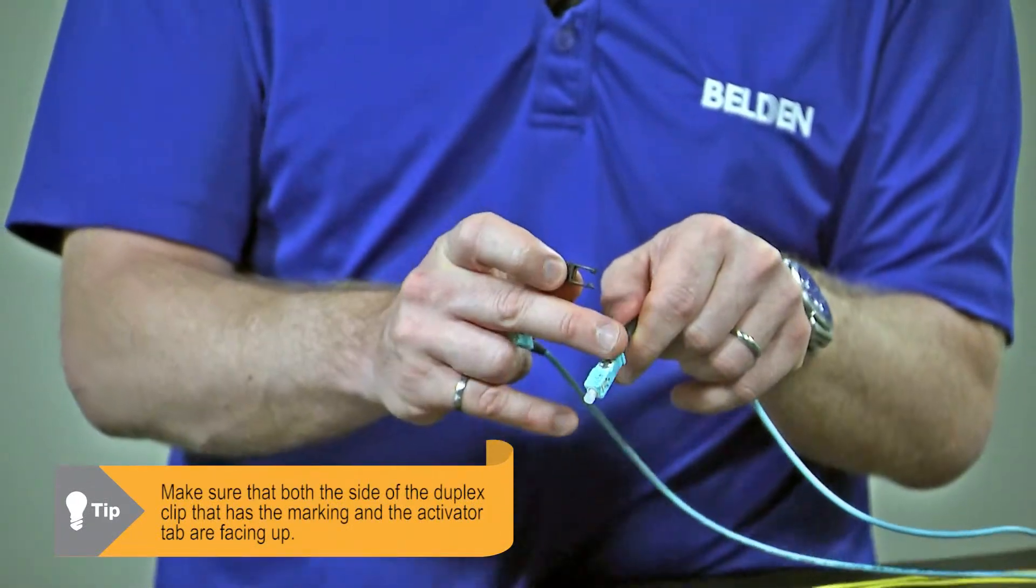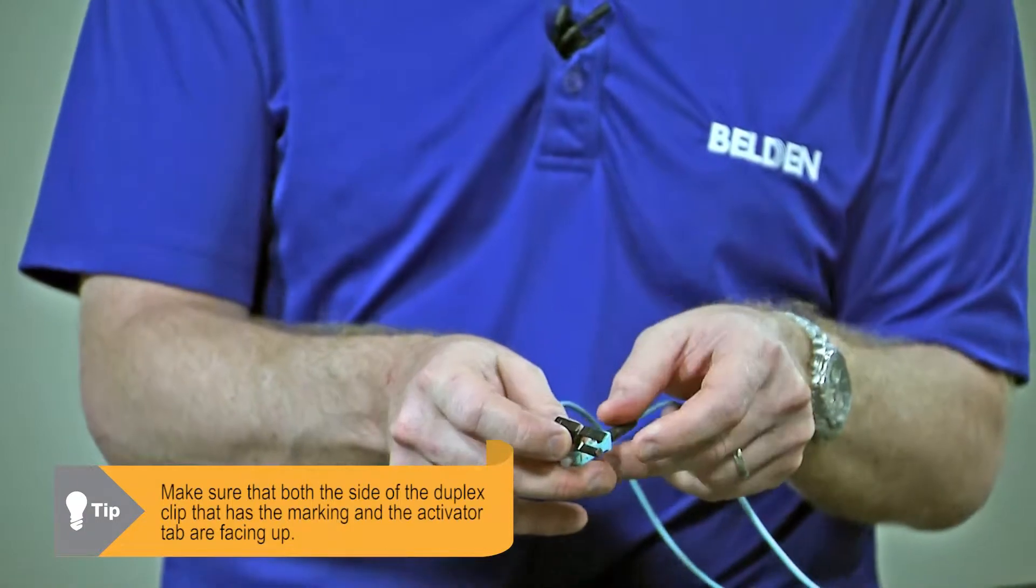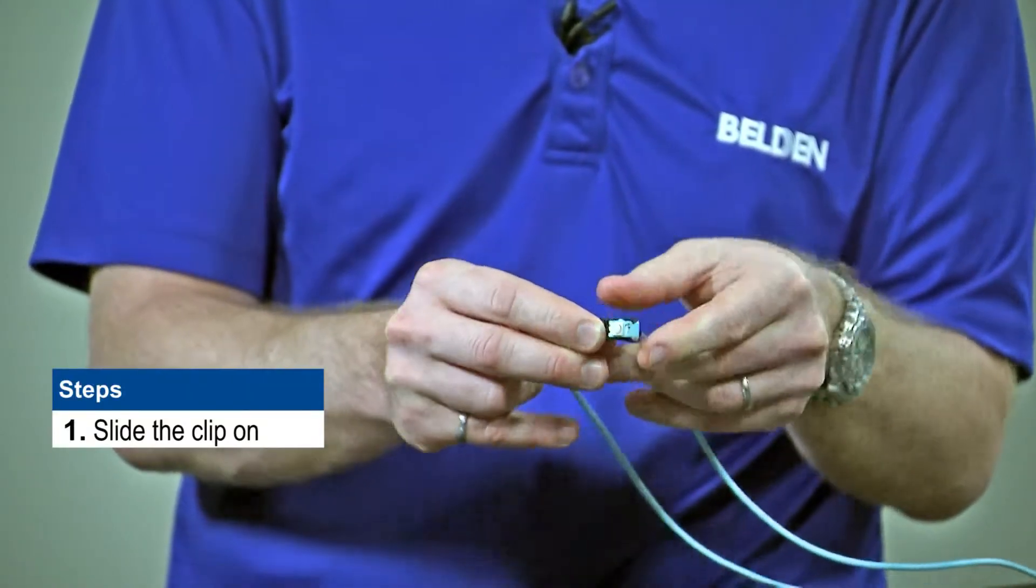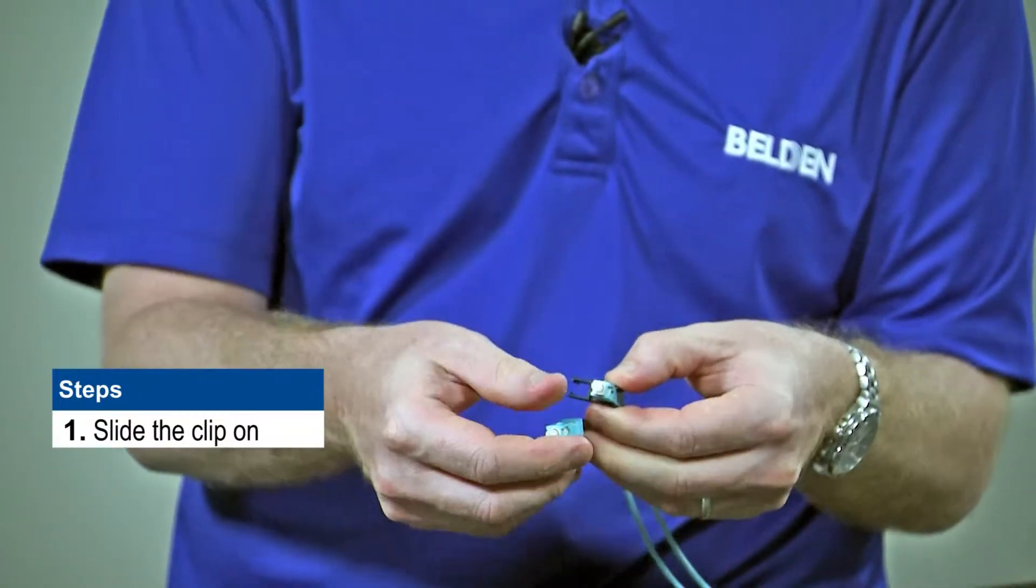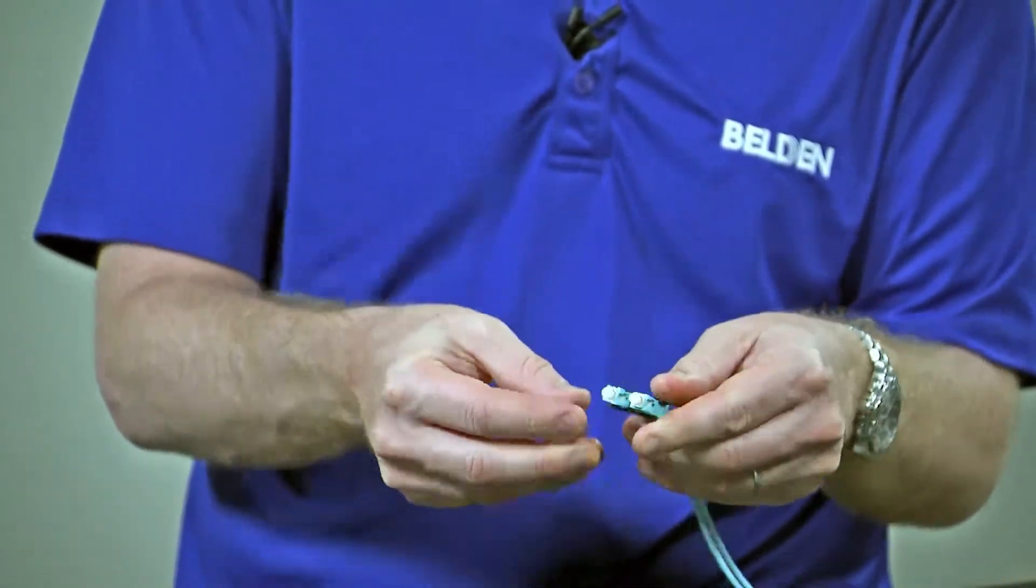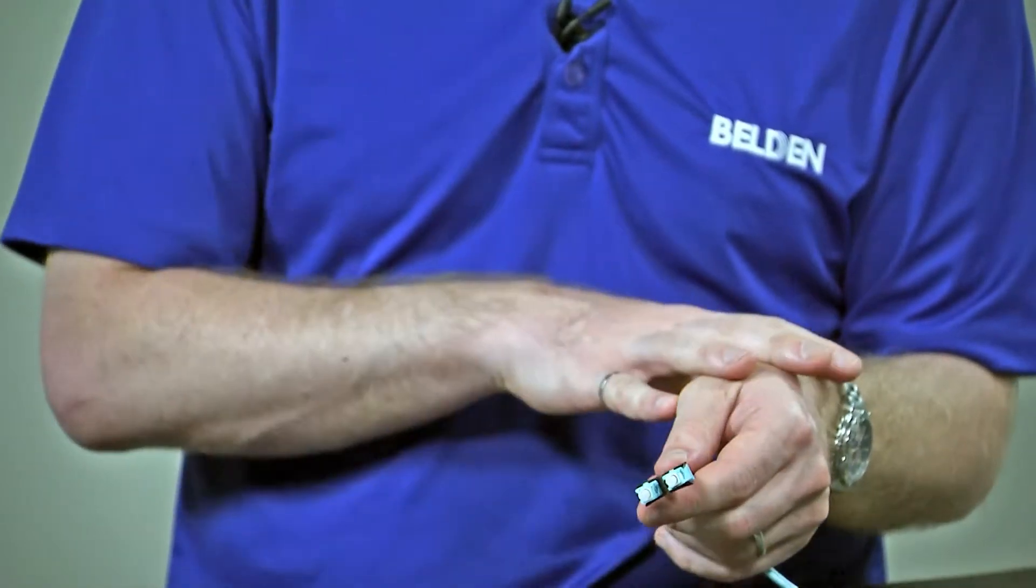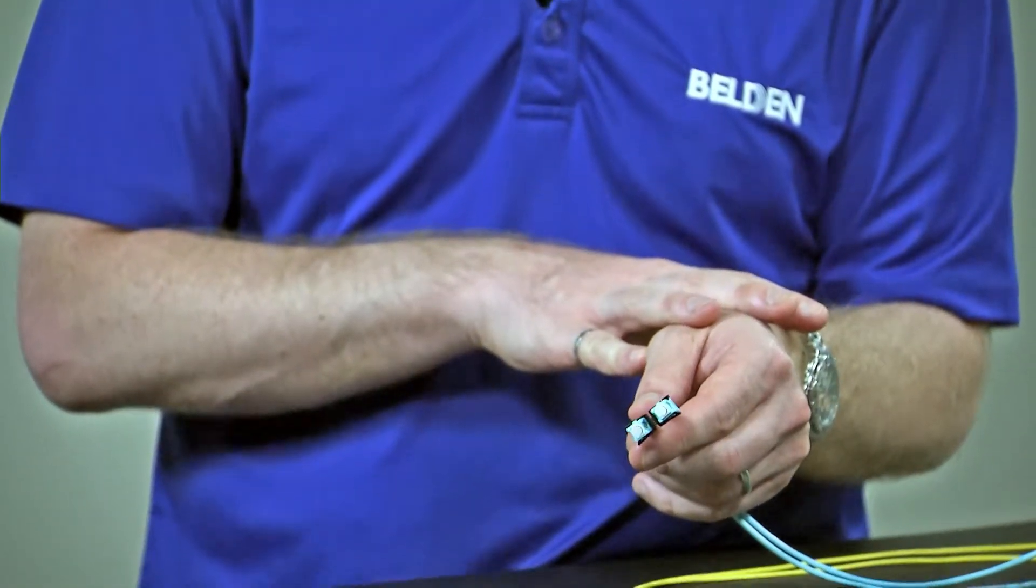Then I'm going to take my connector and have the activator tab also facing up. I can then simply slide the clip on over the activator tab. It will cover it completely and I can do the same for the other side. Now I can hold my two connectors together and maintain proper polarity as I patch it into my patch panel.